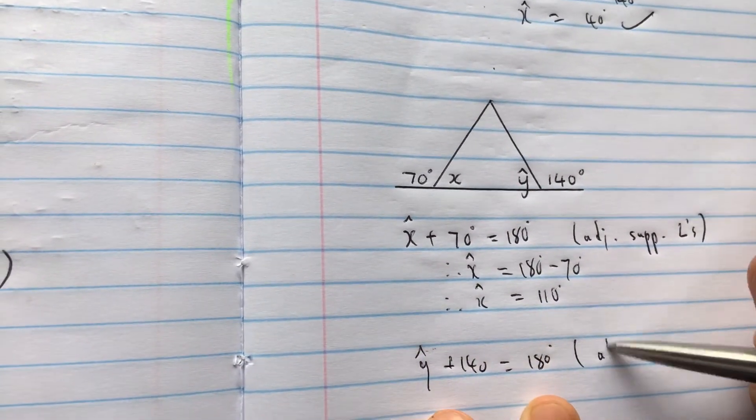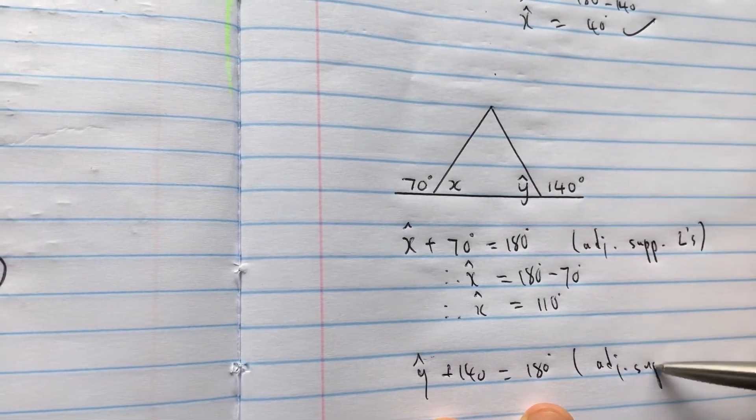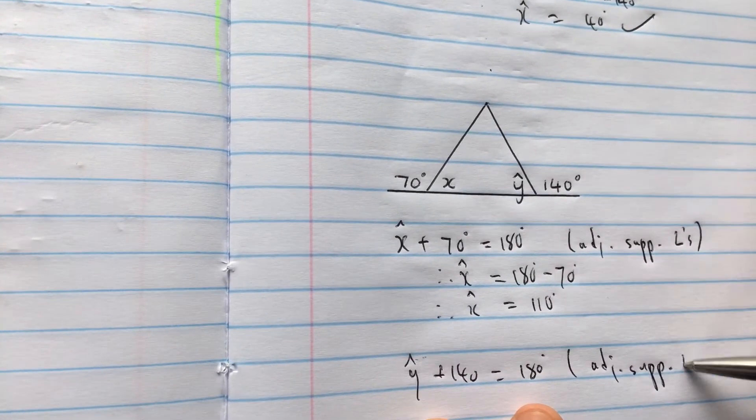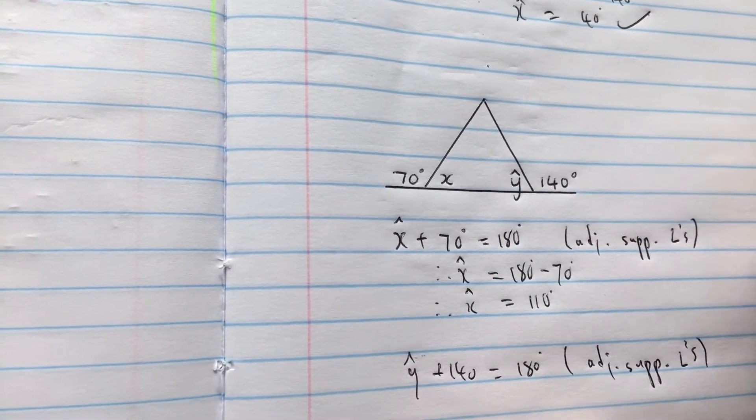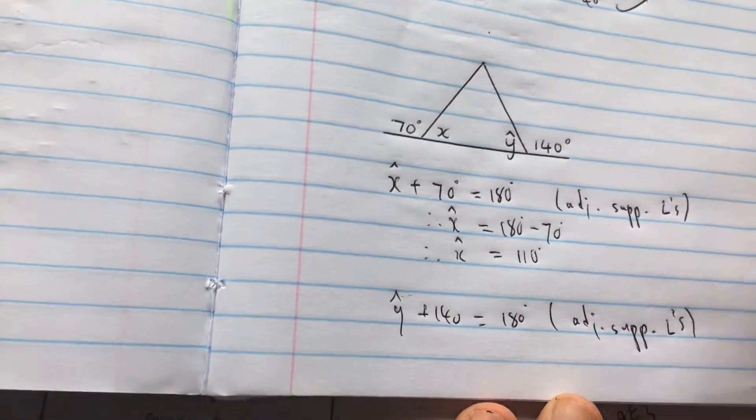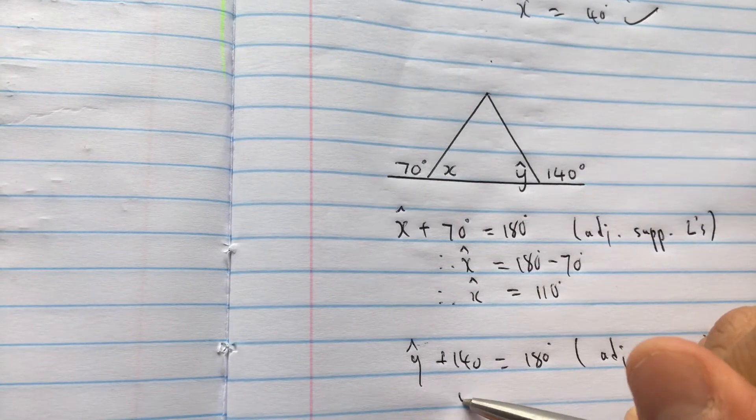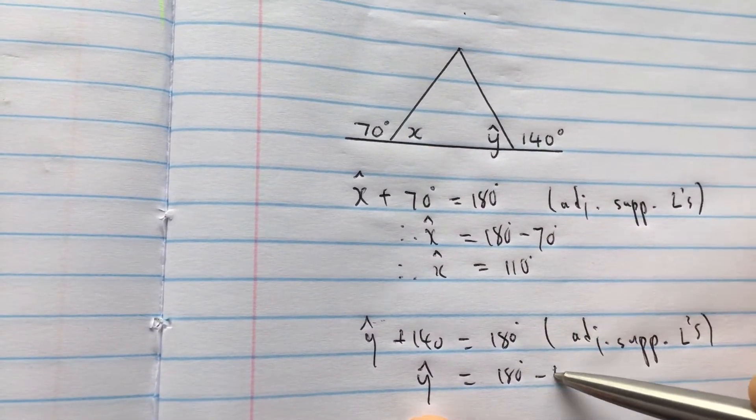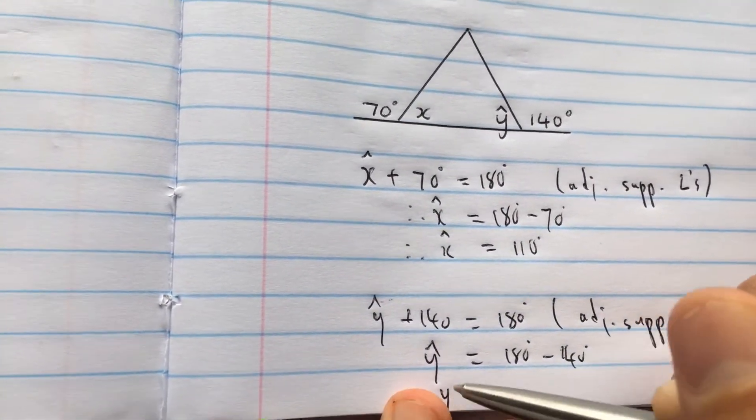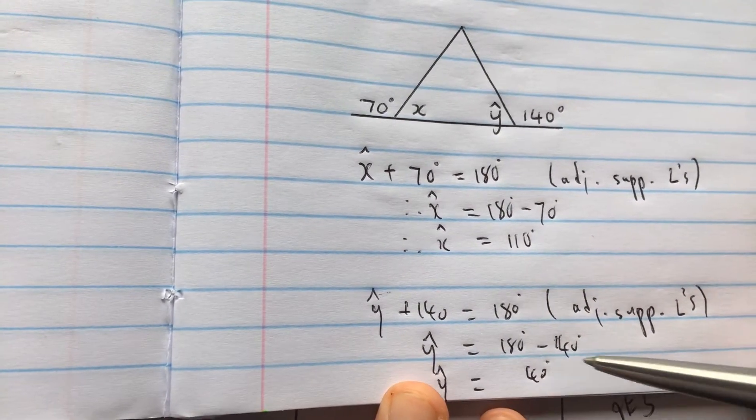You can't just make that statement. You get a mark for this. Even if you give the reason, you get a mark. If you get the whole thing wrong, give me the right reason you get a mark. So angle y is equal to 180 degrees minus 140 degrees. Angle y is equal to 40 degrees.